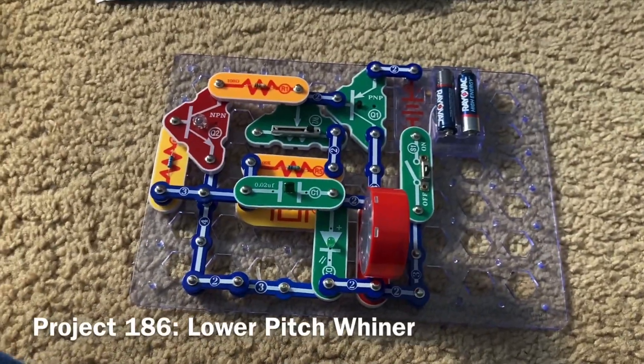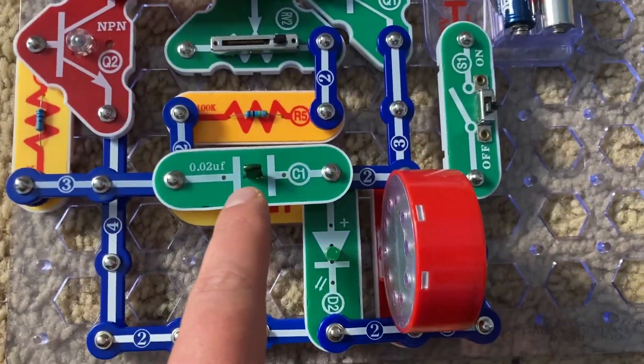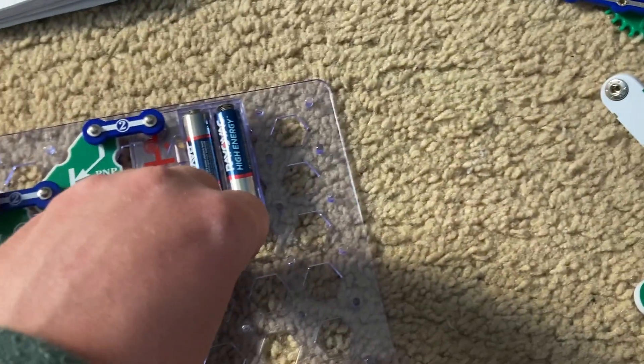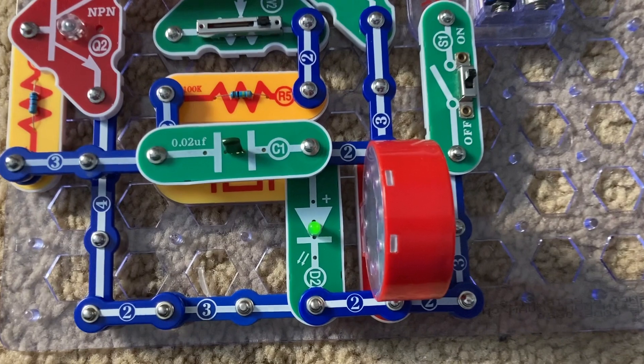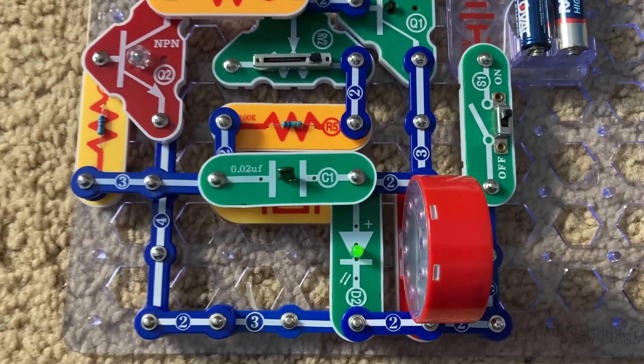For a lower pitch whiner, I place the C1 capacitor right over the whistle chip and now the pitch is a little lower due to the added capacitance.